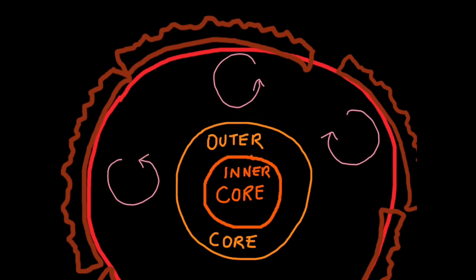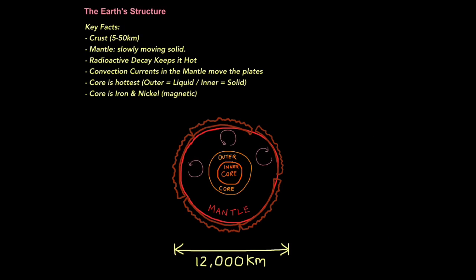Knowing that convection currents drive the rock cycle will really help you in exams because it comes up a lot. So a quick summary of key facts: the crust is 5 to 50 kilometers deep and it's the outer layer of the earth. The mantle acts as a slowly moving solid and radioactive decay keeps it hot. There are convection currents in the mantle that move the plates. The core is hottest, the outer part is liquid and the inner a solid. The core is iron and nickel which makes it magnetic and gives the earth a magnetic field.